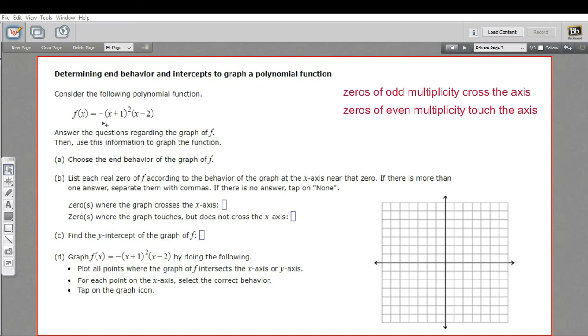In this problem, we have an equation of a polynomial function. It's given to us in factored form, so finding the zeros won't be too difficult. What we're being asked to do here is to determine its end behavior,